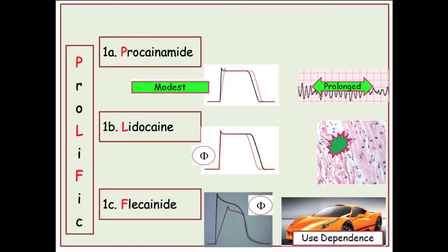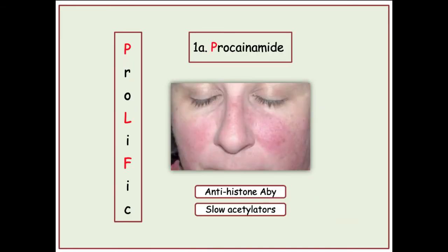To summarize key takeaways: 1A agents prolong the action potential and predispose to torsade. 1B weakly affects the action potential and quickly dissociates from the sodium channel, making them safe in the peri-infarction period. 1C agents demonstrate use dependence. Lastly, you need to be familiar with drug-induced lupus associated with procainamide, characterized by generation of antihistone antibodies and more typically seen in patients described as slow acetylators.